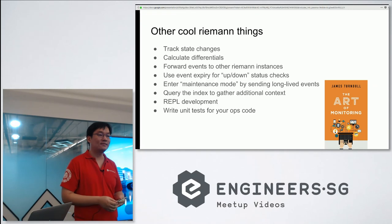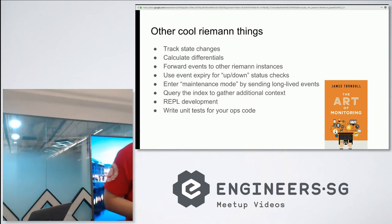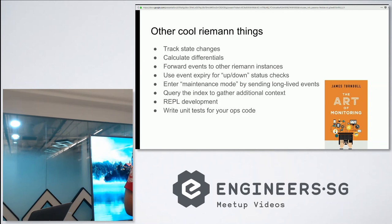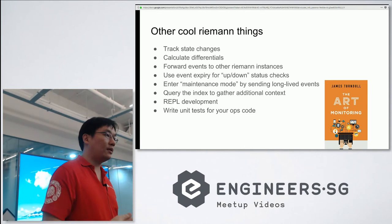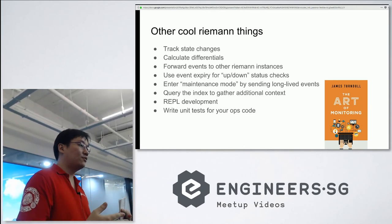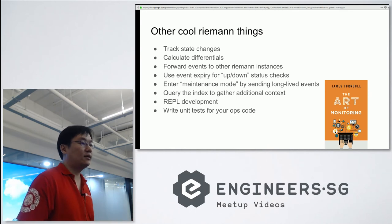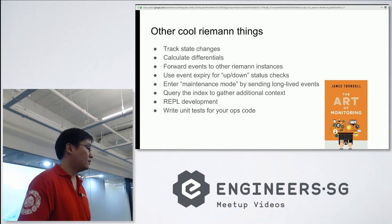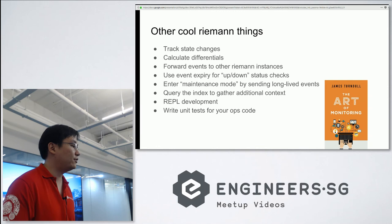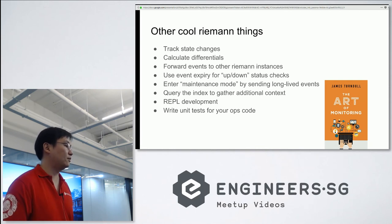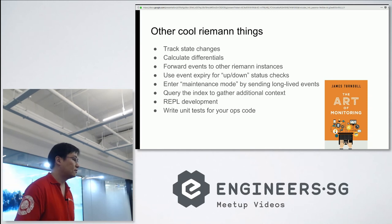Q: How does the application actually connect with Riemann? It pushes data, right? How does it subscribe? A: Riemann uses a TCP socket. Any component that wants to send events to Riemann connects to the socket and sends protocol buffers — that's Riemann's protocol. There are lots of client libraries available for Riemann, including Java, Go, and so on. So you can collect JVM data or status and send it to Riemann.